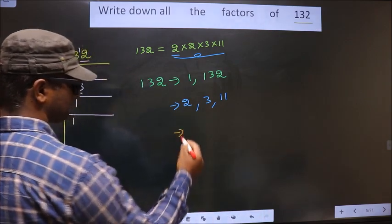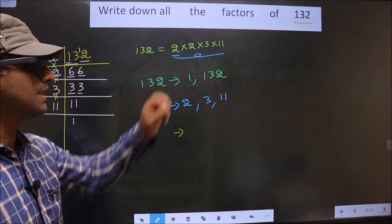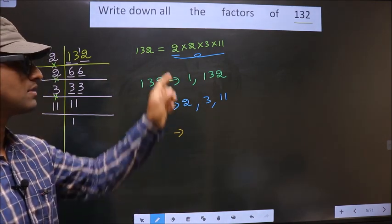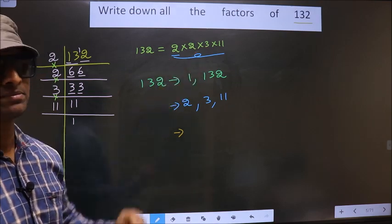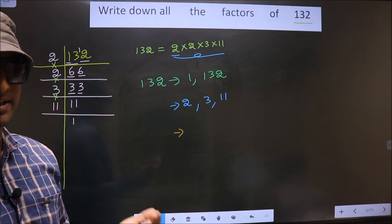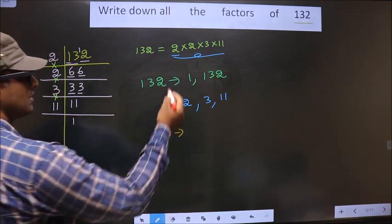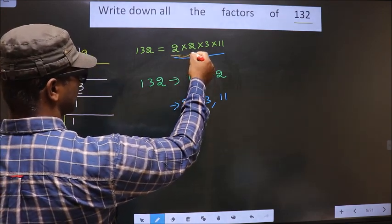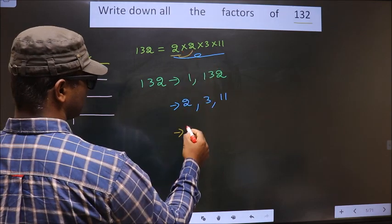We have selected one number from these numbers. Now you should select 2 numbers from these numbers. First you fix one number, that is 2. Now combine it with the other number. So 2 times 2 is 4.